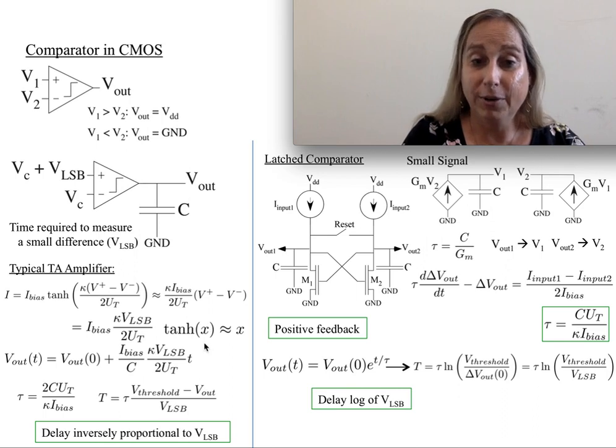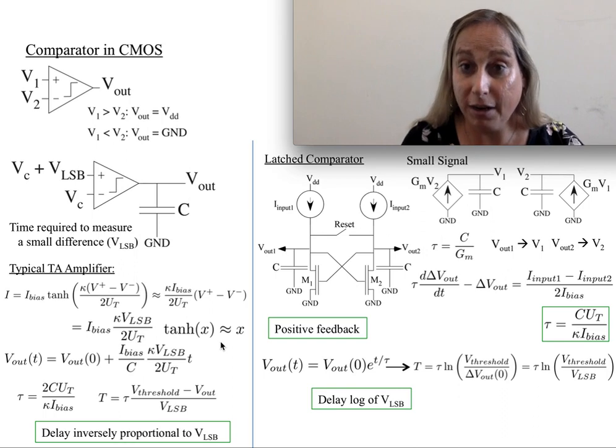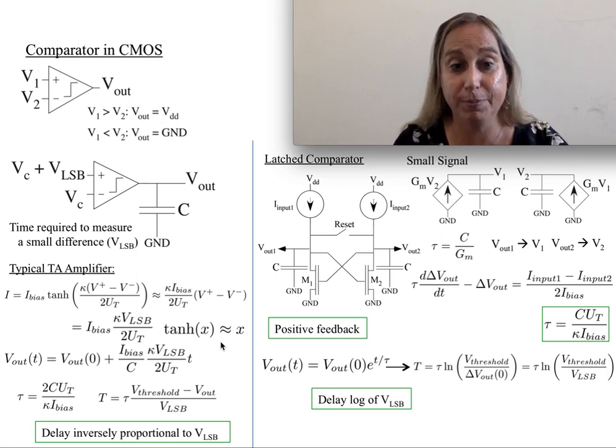Remember the linearized, because tanh is approximately x. Tanh of x is approximately x. So given this, now how do you proceed?